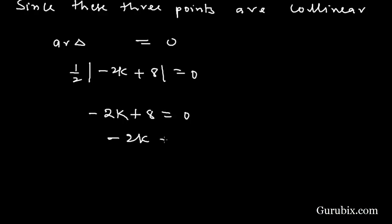Then minus 2k equals minus 8. Therefore k equals 4. This is the solution of the question. Thank you.